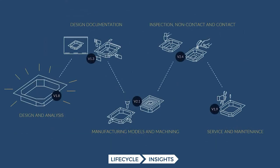This extends to the idea of a digital thread. For each of these design deliverables, you're going to have a set of derived deliverables that specify how it needs to be manufactured, how you check it for quality, and how you're going to service and maintain it. Each design deliverable in every engineering domain has a digital thread like this — a set of derived deliverables that specify how it's going to be made, serviced, and checked throughout the rest of the development process.